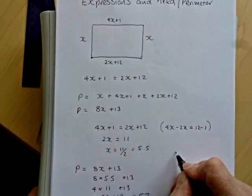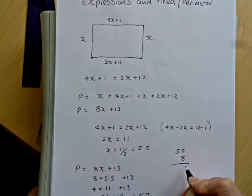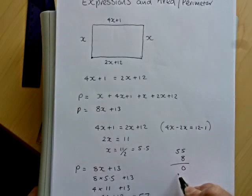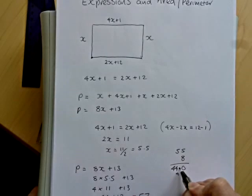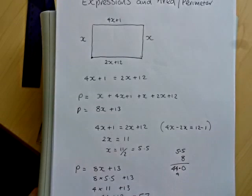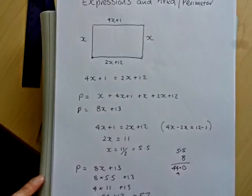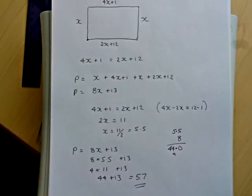Another way of doing 8 times 5.5 is to do 55 times 8. 5 8s are 40, 5 8s are 40, another 4. And then make sure you bring the point in because it was 5.5 times 8. And again it gives you that same answer there of 44, and so it's 44 and 13 giving you a total perimeter of 57.